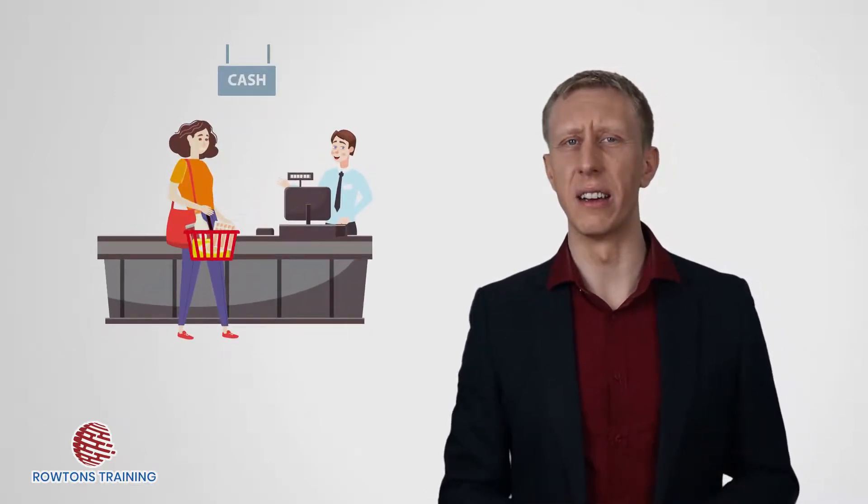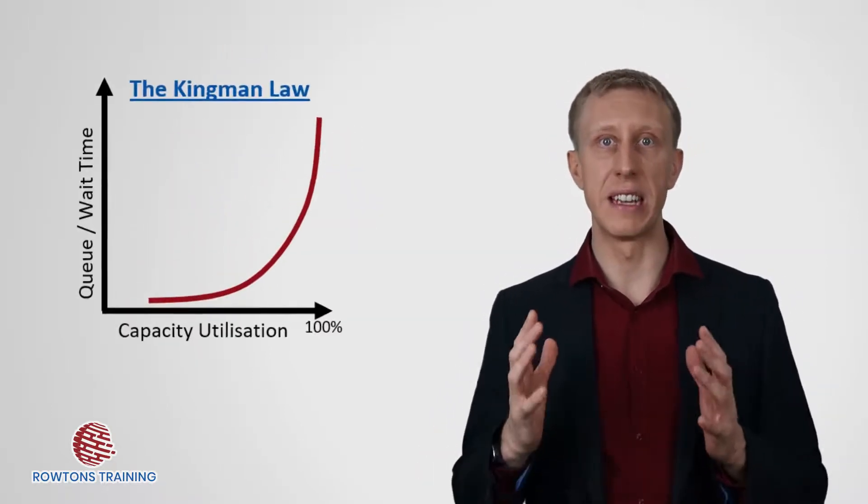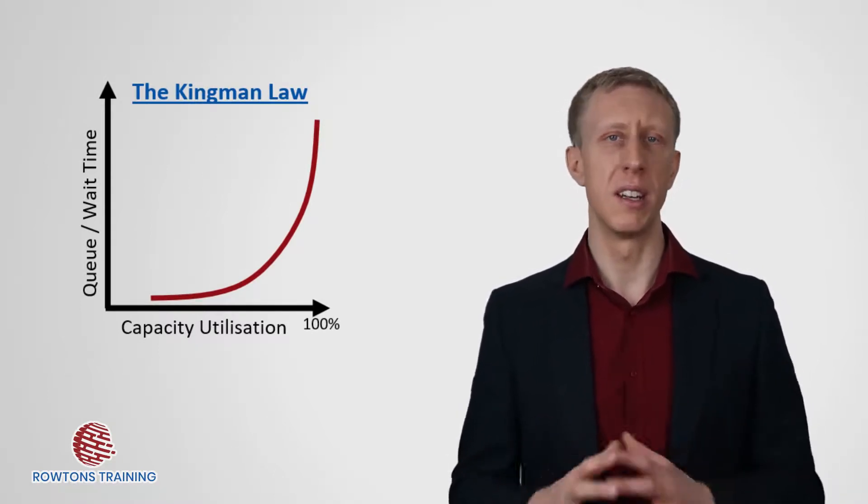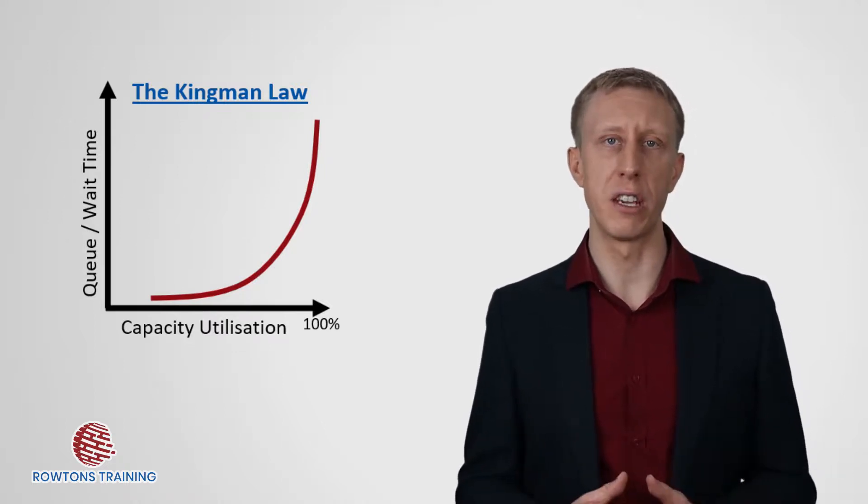So that only leaves the management choice of how much capacity, how many cashiers to hire. In business operations, what we find is that queue times start to drastically increase when we go above a 70 to 80% utilisation, depending on the level of variation.